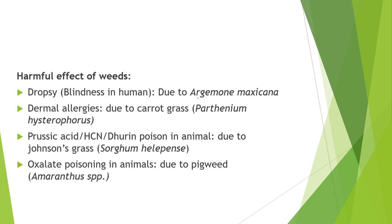First harmful effect is dropsy — it causes blindness in humans and is caused by Argemone mexicana, also called prickly poppy weed. Second is dermal allergies — skin diseases caused by carrot grass or Parthenium hysterophorus. Some weeds release prussic acid (HCN) and durene poison, caused by Johnson's grass, known as Sorghum halepense. Oxalate poisoning in animals is caused by pig weed and Amaranthus species.